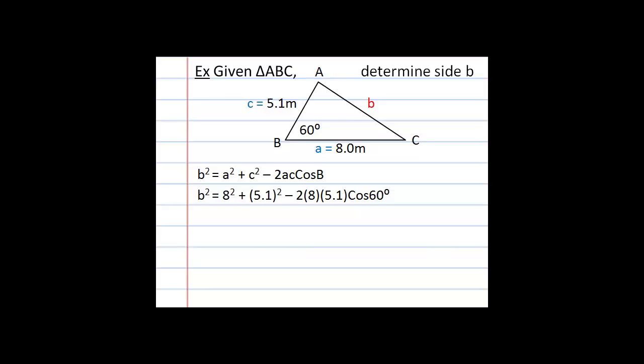Calculating: 8² = 64, 5.1² = 26.01, and 2 × 8 × 5.1 = 81.6, which must still be multiplied by cosine of 60° before adding or subtracting, following order of operations. So b² = 64 + 26.01 − 81.6 × cos60°. Putting this into the calculator and then taking the square root gives b = 7 meters.